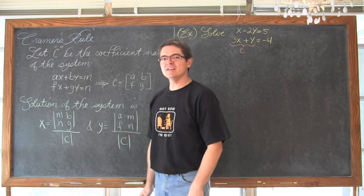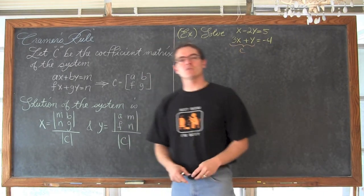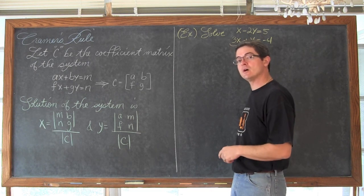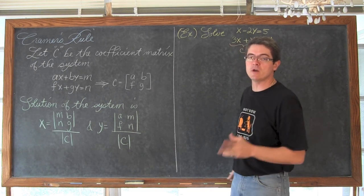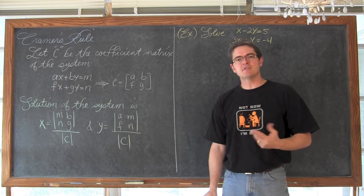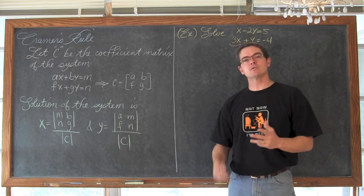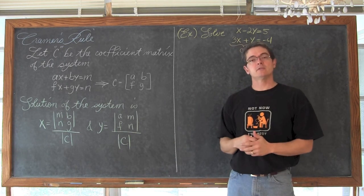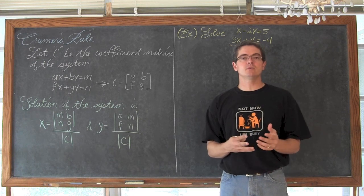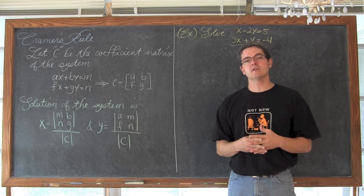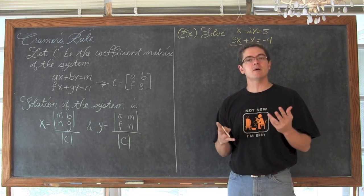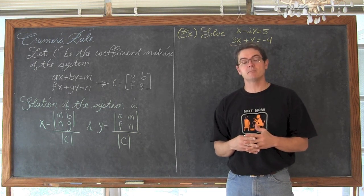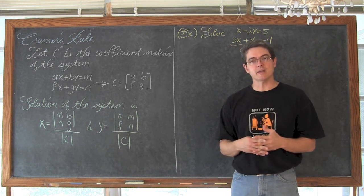BAM! Mr. Tarrou! In this video we are going to look at two examples of using Cramer's Rule to solve systems of equations in a different manner. We are going to do first a 2 by 2 matrix and then a 3 by 3 matrix. Cramer's Rule is really going to be a much more efficient way of solving that larger 3 by 3 matrix system of equations compared to using the Gaussian elimination method.